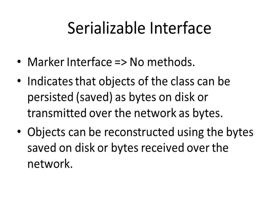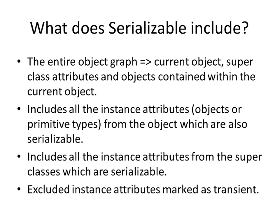That is the advantage of using the serializable interface. When it saves an object, it actually saves the entire object graph of an object. That includes the current object and the attributes that it inherits from its base classes. And if that object contains other objects which are serializable, then those objects are also serialized. That's what the entire object graph means.